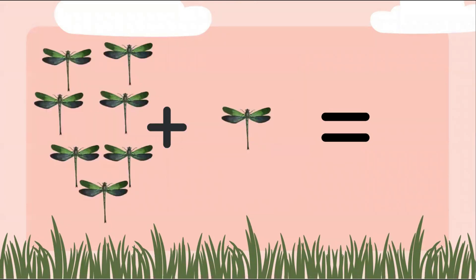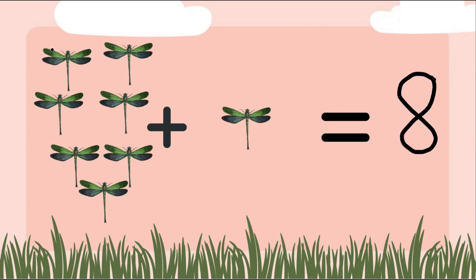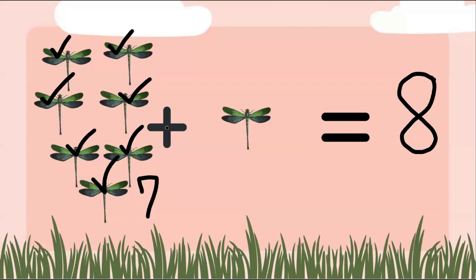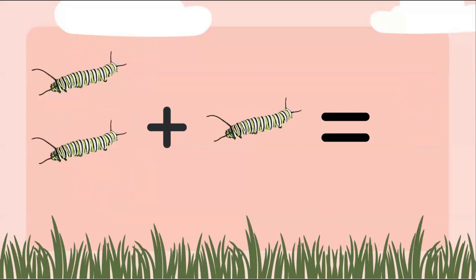This group is a little bit larger — can you solve it on your own? I'll give you some think time. Awesome job! The answer is eight. Count with me: one, two, three, four, five, six, seven, plus one, which gives us eight. Excellent work!